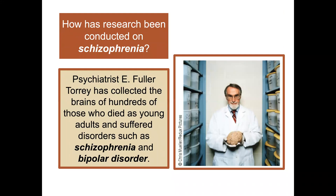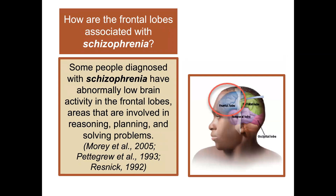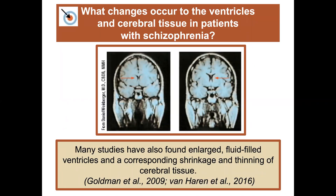Psychologist E. Fuller Torrey has collected the brains of hundreds of those who died as young adults and suffered disorders such as schizophrenia and bipolar disorder. Some people diagnosed with schizophrenia have abnormally low brain activity in the frontal lobes — areas involved in reasoning, planning, and solving problems. Many studies have also found enlarged fluid-filled ventricles and a corresponding shrinkage and thinning of cerebral tissue.